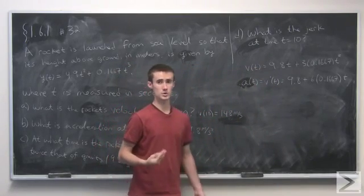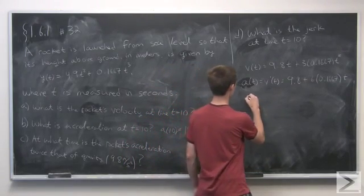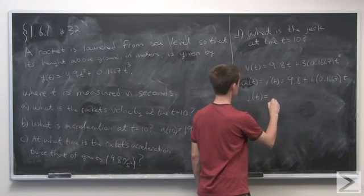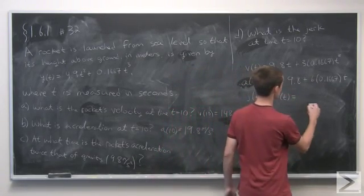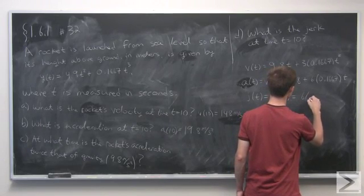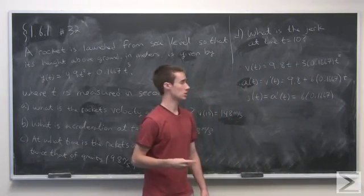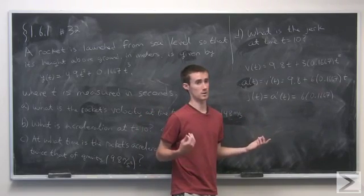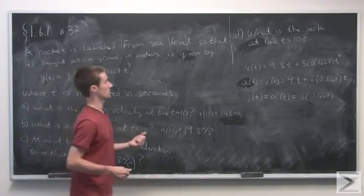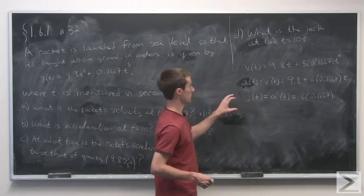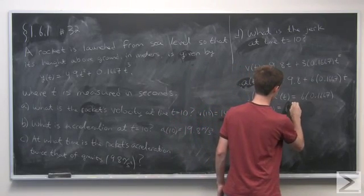For the final part, we're asked to find the jerk, which is the instantaneous rate of change of the acceleration. The jerk j of t is equal to a prime of t. The derivative of the constant 9.8 is just 0, and we're left with 6 times 0.1667, which is just a constant. So the jerk at time 10 will be that same constant value.